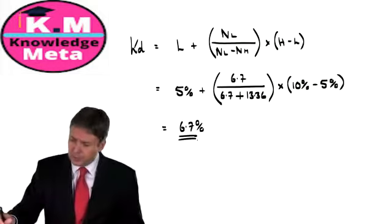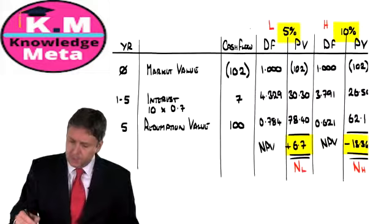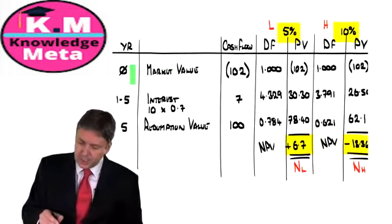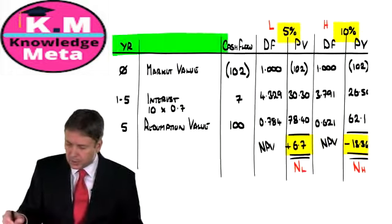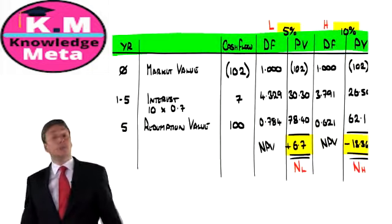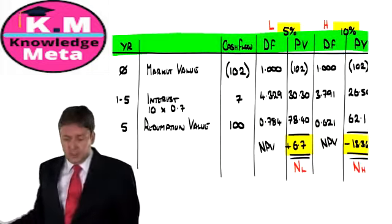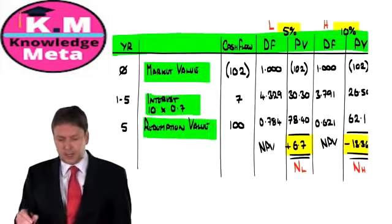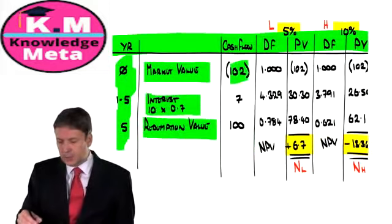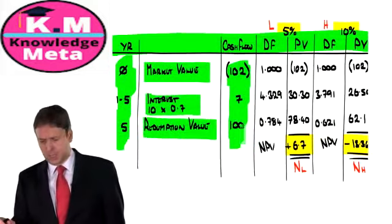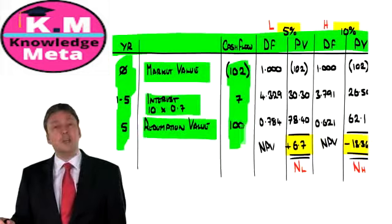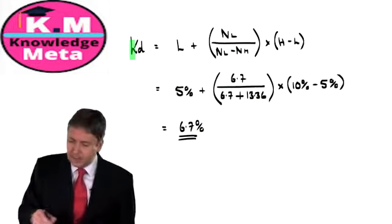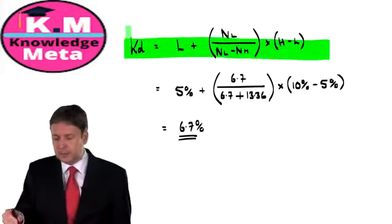To recap: what have we done here? First we set up the proforma with seven columns. Then we identified our cash flows — the market value outflow and the interest and redemption inflows — and matched them to their years. Once we had that, we discounted to get our net present values, and finally slapped those into the IRR formula to get a result. No thinking required.